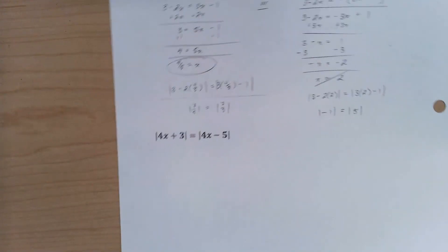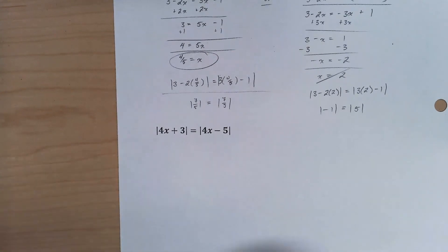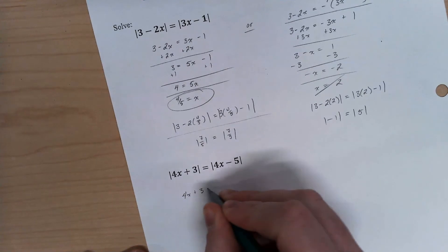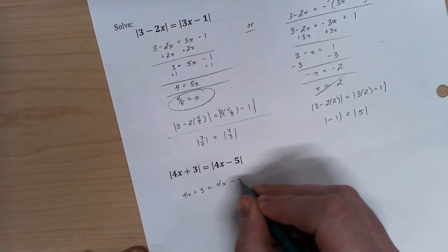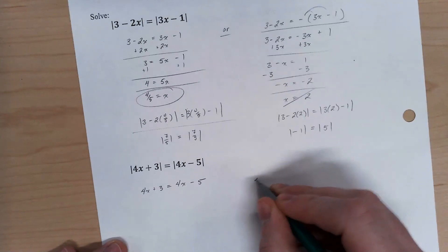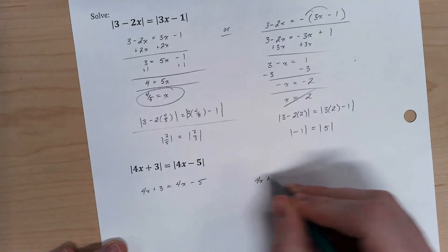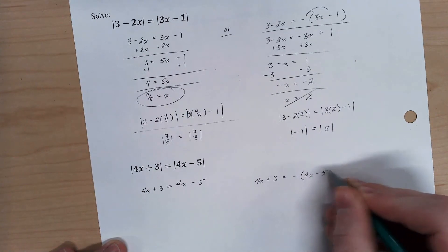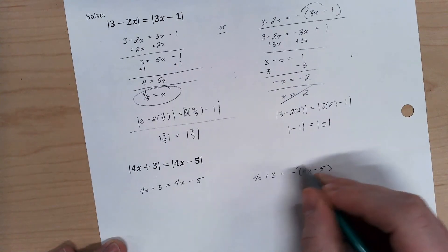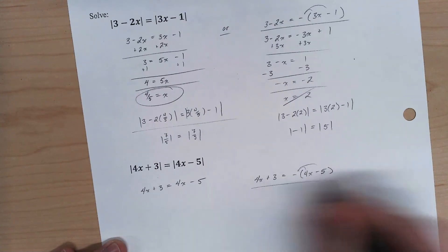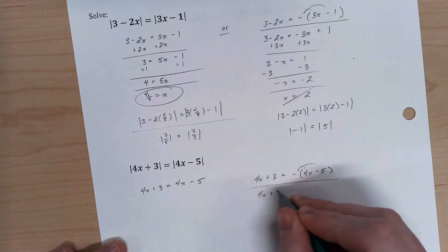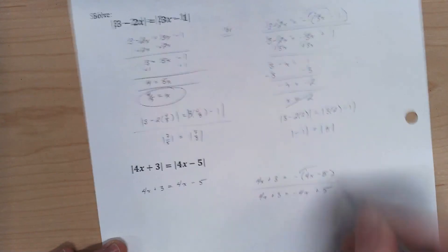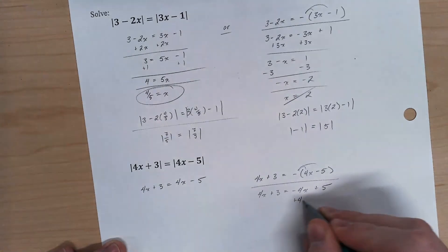All right. Let's take a look at this last one. So same process. I set the inside equal to each other. And I set one of them equal to the negative of the other. Again, it doesn't matter which one I put the negative on, as long as I just put it on 1 and I get that negative distributed. Now I'm good to go to solve.